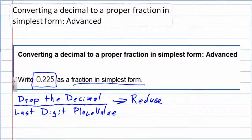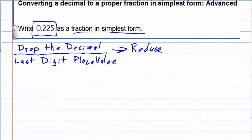Let's see what happens when we try this problem. First of all, the numerator. We're supposed to drop the decimal so instead of 0.225 we just have 225.